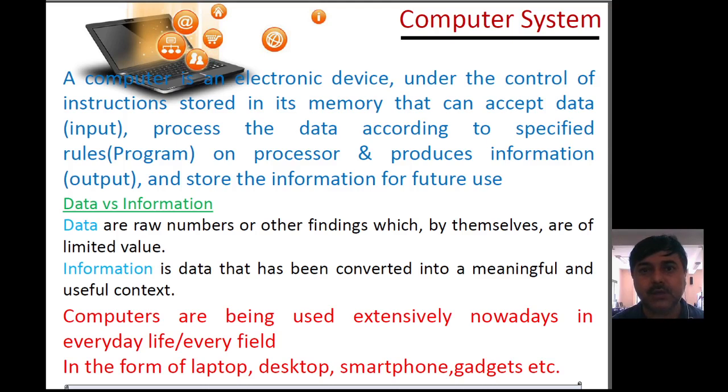Computer system is an electronic device. Under this device we have to control the instruction, store the data, and there are different patterns of memories. Memory for storage, processing data for recording, and specifying certain rules. On this particular processing and procedures we have input and output systems where we store the data and use the data.